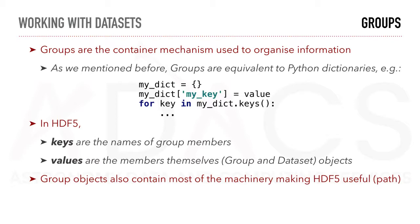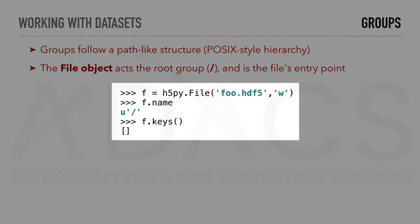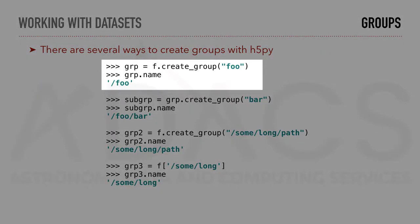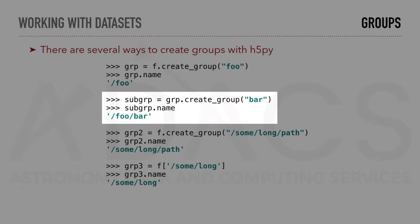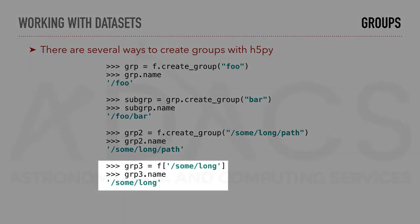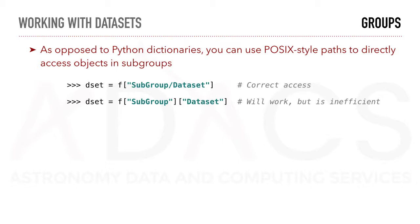Groups are equivalent to Python dictionaries, where you can set a value to a specific key. In HDF5, keys are the names of the group members and values are the members themselves. Groups follow a path-like structure; the file object acts as the root group, marked by a slash, and is the file's entry point. Groups can be created in several ways: using the createGroup function specifying the name, repeating this to create subgroups, specifying the path at creation on the file object, or creating a group like a Python dictionary. Note that the full path is taken into account, and you can use POSIX-style paths to directly access objects in subgroups.